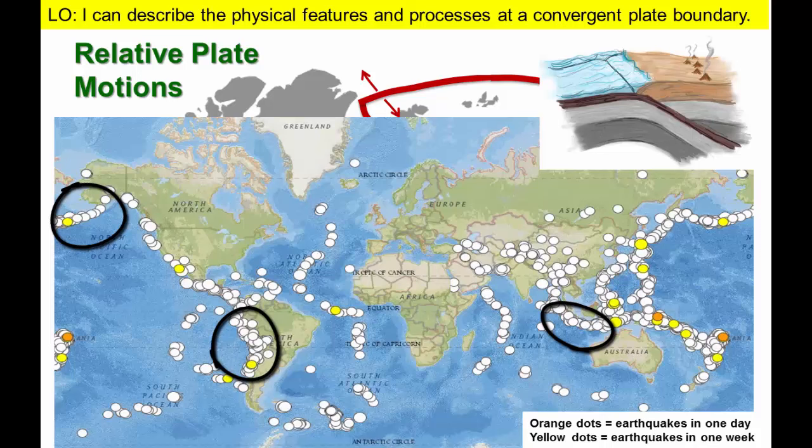This map shows the locations of more than 1,600 earthquakes of magnitude 5 or greater that occurred in a single year. Note that there are continuous zones of earthquake activity associated with our three examples of oceanic-continental convergent boundaries. Zooming in on two convergent boundaries on either side of the Caribbean plate, we can take a closer look at where exactly these earthquakes are occurring.